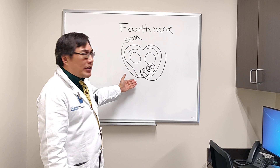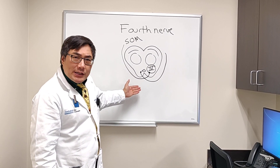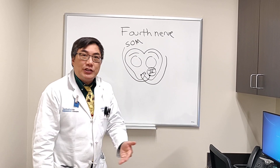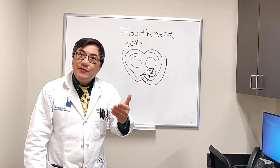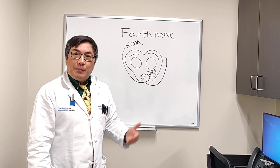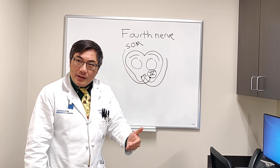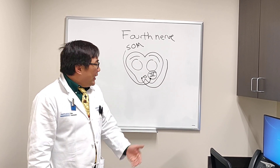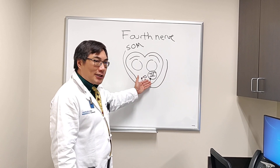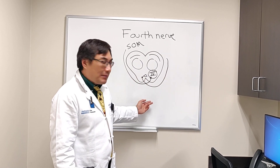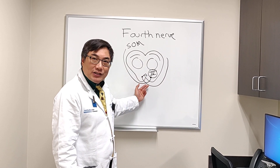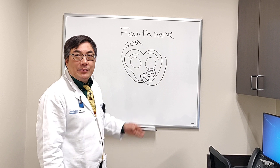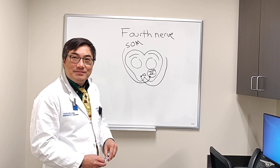When dealing with a fourth nerve palsy, we need to do a three-step test, which is covered in a different video. The predominant symptom is diplopia with or without torsion. Key points: it's crossed, exits dorsally, can be bilateral in trauma, and innervates one muscle — the superior oblique.